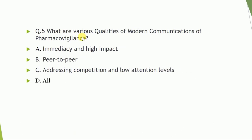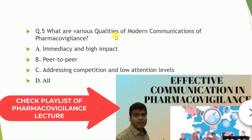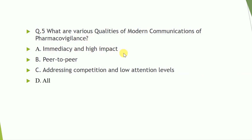Question number five: What are various qualities of modern communication of pharmacovigilance? A) Immediacy and high impact. B) Peer-to-peer. C) Addressing competition and low attention level. D) All are correct. The correct answer is all of these.